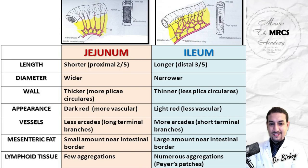The large intestine is about one and a half meters, extending from the ileocecal junction to the anus. You can identify it by the taenia coli to differentiate it from the ileum — this is intraoperative identification. You can also identify the appendix by the convergence of the taenia coli to form the base of the appendix.